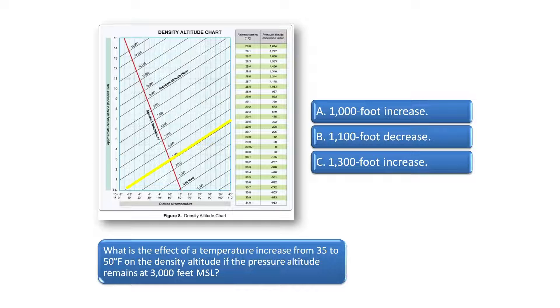To find the answer, draw a line up from the 35 degree section under outside air temperature to the 3000 foot pressure altitude line highlighted by the yellow line. Then move over to the left side of the chart to see the density altitude is just under 2000 feet.